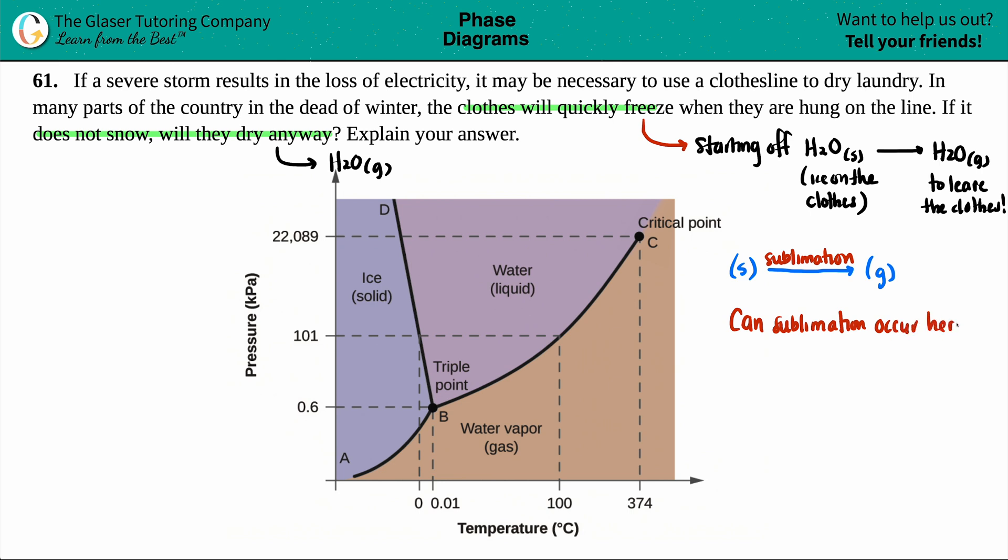Can sublimation occur here? That's basically what the question is asking for. Well, they did say that it's the dead of the winter, so we're talking about extremely cold temperatures. So we're in the dead of the winter, this is extremely cold temperatures. And what I did was I pulled up a phase diagram of water. And in this case, they do have temperature for degrees Celsius, but all we just have to know is that we're dealing with cold temps. Now cold temps over here, zero degrees Celsius, that's freezing. So we already know that the clothes are going to be freezing already.